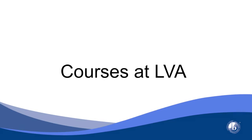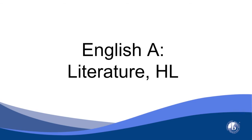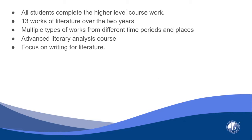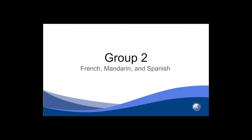LVA offers a variety of courses to provide students with a truly well-rounded education. The next part of the presentation will detail the courses we offer for the junior and senior year. All students at LVA take the English course — the literature course — at the higher level. This course is a two-year course where students study 13 works of literature from different time periods, multiple places, and different genres. It is an advanced literary analysis course focusing on writing for literature. Each of the DP courses has a major writing component, even math, where they focus on writing for that particular subject. This presentation will go over your options for Group 2, or your options for your foreign language courses.